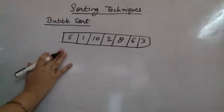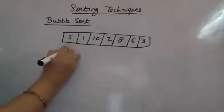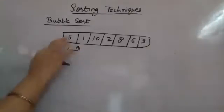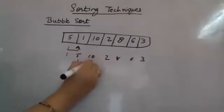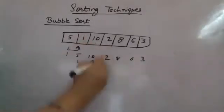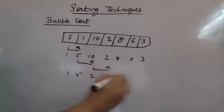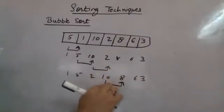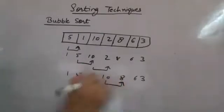Bubble sort is also known as exchange sort. The procedure checks two adjacent elements — for example, five and one are checked, and whichever is smaller gets swapped. So the new list becomes one, five, ten, two, and so on. The next two elements are compared; if they are the same they won't be swapped. If a[i] is less than a[i+1] then I will do the exchange.